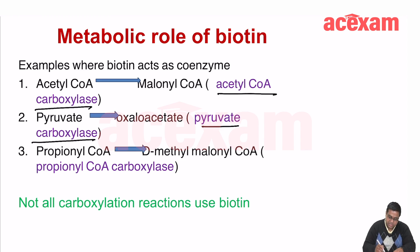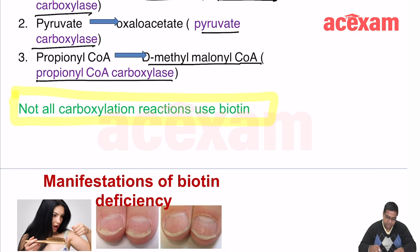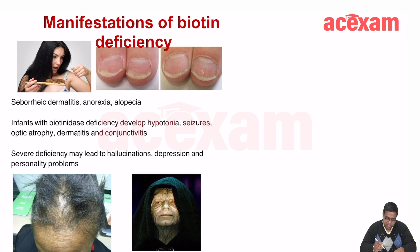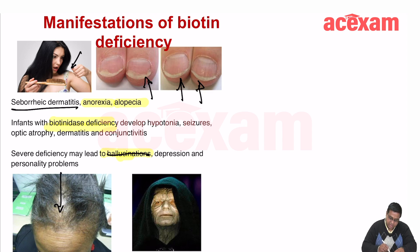The metabolic role of biotin includes carboxylation reactions: pyruvate carboxylase (converts pyruvate to oxaloacetate), acetyl-CoA carboxylase (converts acetyl-CoA to malonyl-CoA), and propionyl-CoA carboxylase (converts propionyl-CoA to methylmalonyl-CoA). Not all carboxylation reactions use biotin, but most do. Biotin deficiency causes seborrheic dermatitis, alopecia, and anorexia. Biotinidase deficiency can cause optic atrophy, conjunctivitis, hypotonia, and seizures.